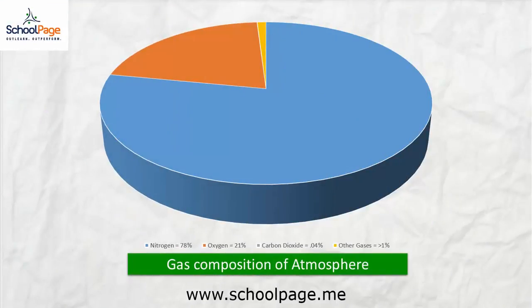What you are observing now is the gas composition of the atmosphere. The major portion of the atmosphere is filled by nitrogen, up to 78 percent, whereas 21 percent is oxygen. You can see that carbon dioxide occupies only 0.04 percent, whereas other gases are less than one percent.